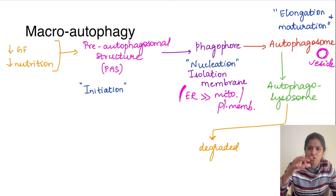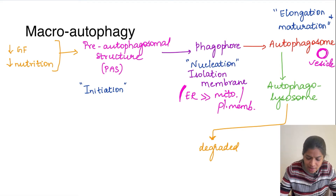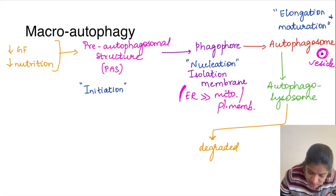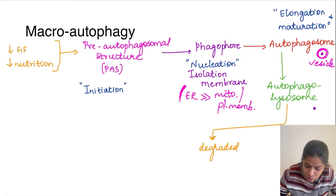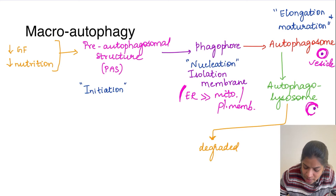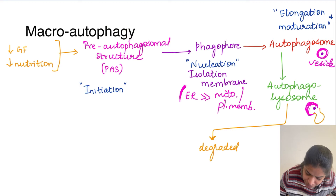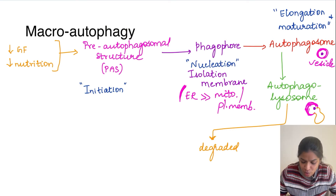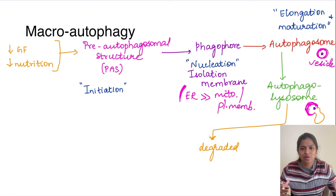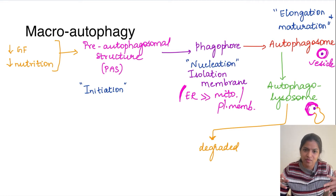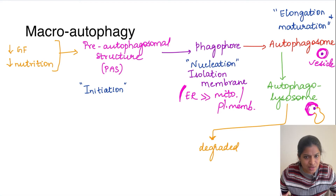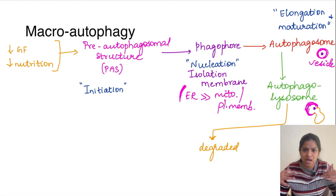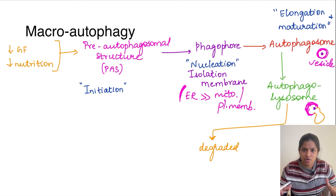The autophagosome containing the target organelle then goes and fuses with the lysosome, forming an autophagolysosome, and inside the lysosome the organelle gets degraded. To summarize macroautophagy: first, pre-autophagosomal structure formation which is initiation; second, formation of the phagophore — the isolation membrane — called nucleation; third, the phagophore extends into a vesicle around the target organelle in the elongation and maturation step; and fourth, the autophagosome fuses with the lysosome forming the autophagolysosome where the organelle is degraded.